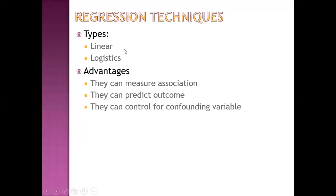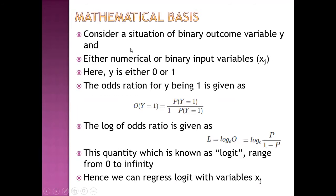Regression techniques are of two types: linear regression and logistic regression. Advantages of regression techniques include measuring association, predicting outcome, and controlling for confounding variables. Consider a situation of a binary outcome variable y, and either numerical or binary input variables x_j. If there are more than two classes, then there should be one-hot encoding.